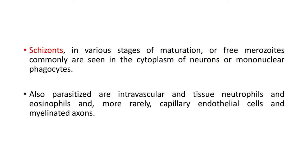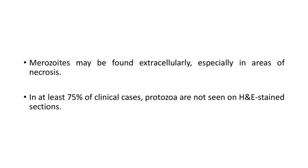Histologically, protozoa may be found in association with a mixed inflammatory cellular response or neuronal destruction. Schizonts in various stages of maturation or free merozoites are commonly seen in the cytoplasm of neurons or mononuclear phagocytes. Also parasitized are intravascular and tissue neutrophils and eosinophils, and more rarely capillary endothelial cells and myelinated axons. Merozoites may be found extracellularly, especially in areas of necrosis. In at least 75% of clinical cases, protozoa are not seen on H&E-stained sections.